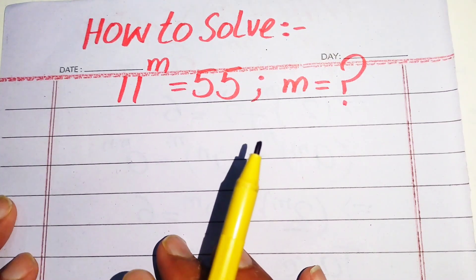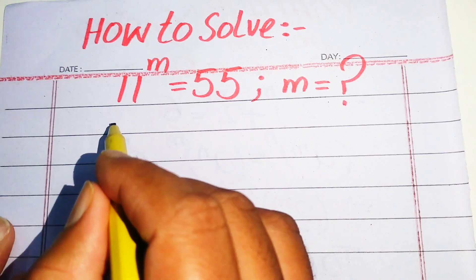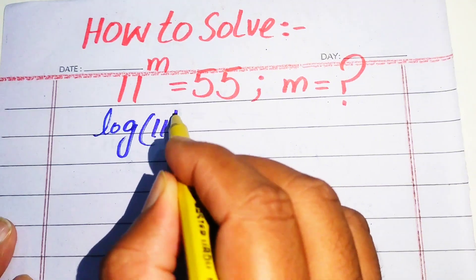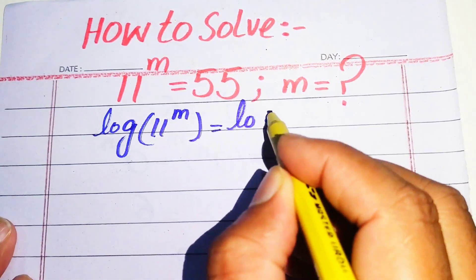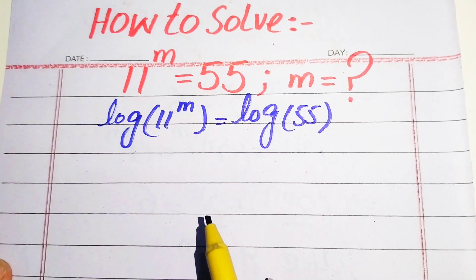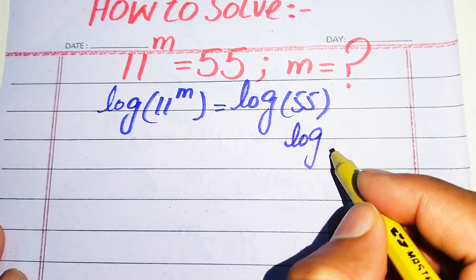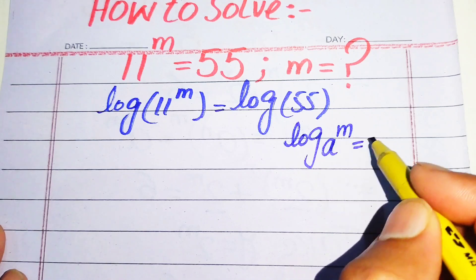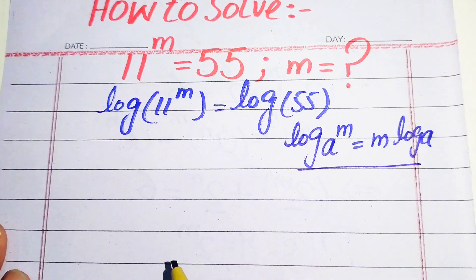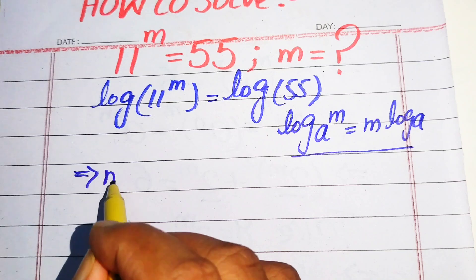The very first step we are going to do is take the log on both sides. When we take log on both sides it is written as log of 11 to the power of m equals log of 55. We then use the nice property of log — if we have log of a to the power of m, we move this exponent m to the front of the log.